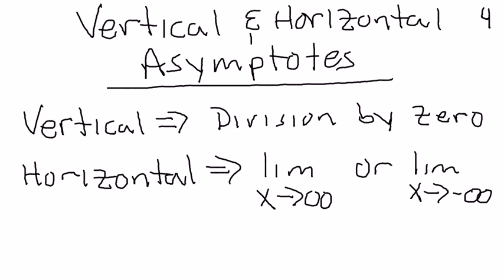A graph can never cross a vertical asymptote. Graphs oftentimes cross horizontal asymptotes.